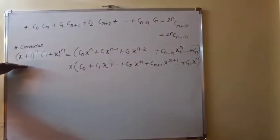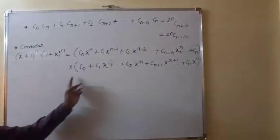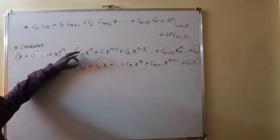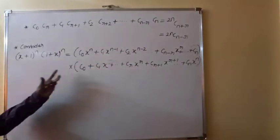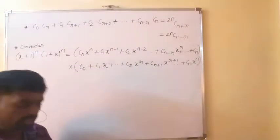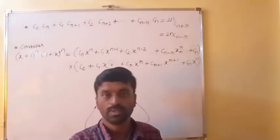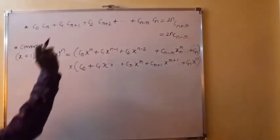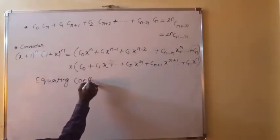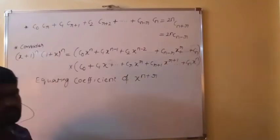To prove this result, consider the multiplication of (X+1)^N into (1+X)^N. The first bracket is the expansion of (X+1)^N and the second bracket terms are in the expansion of (1+X)^N. If you multiply these two, you get a polynomial on each side. Since those two polynomials are equal, corresponding coefficients are also equal. To get this result, equate the coefficient of X^(N+R) on both sides.